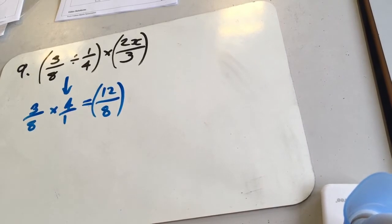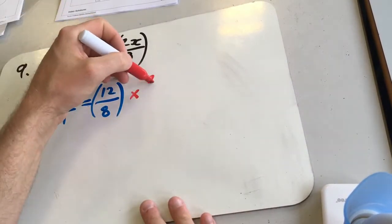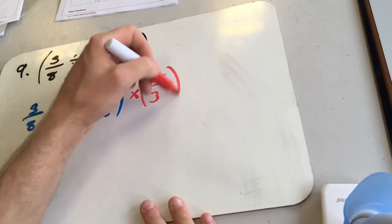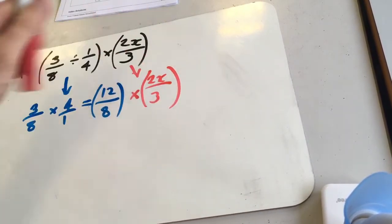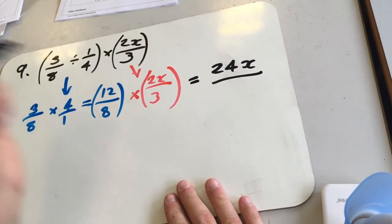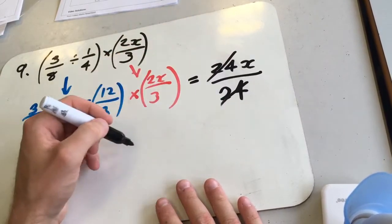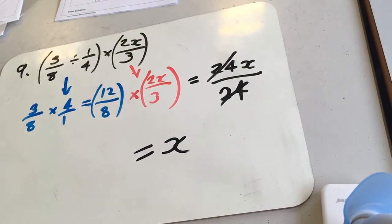And now we're going to times that by the other bracket. So we're going to get 2x over 3. So times the tops, times the bottoms, so we're going to get 24x over 8 times 3, which is also 24. Those are going to cancel, leaving us with x.